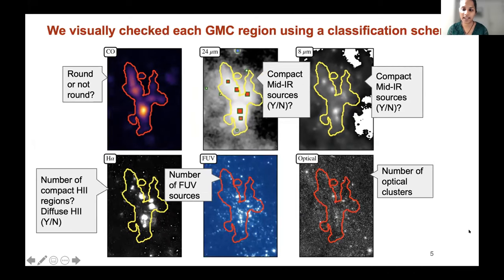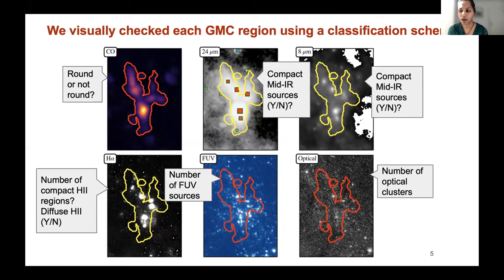We essentially classified these GMCs based on whether they were showing signatures of no star formation, massive star formation only, or active star formation. In the literature, these are classified as Type 1, Type 2, and Type 3 evolutionary states of a GMC. The signs we were looking for were whether the GMCs had any compact HII regions, which would trace massive star formation only, or whether they had more embedded star formation traced by the 24 micron and 8 micron maps and far-UV sources. We also segregated the GMCs based on whether they were round structures or more extended structures. This turned out to be a miniature citizen science project, and it took us a lot of time to refine our classification scheme.